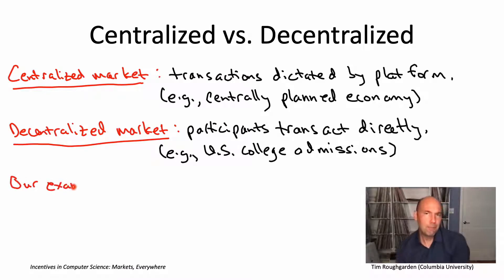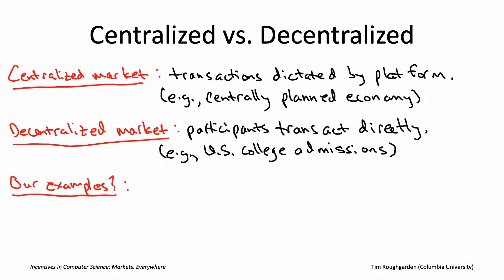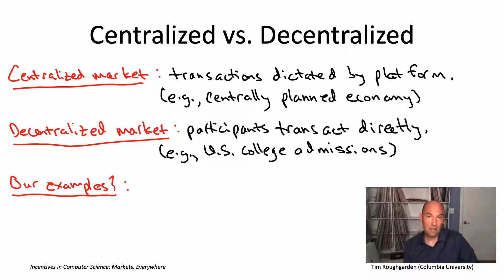So how about all of the examples that we went through in the previous video? Which of those markets are centralized and which are decentralized? Well, Amazon is decentralized — sellers can show up and pick whatever it is they want to sell, and buyers can show up and just buy whatever it is they want to buy. Amazon doesn't tell you that you must buy this thing from this particular seller.